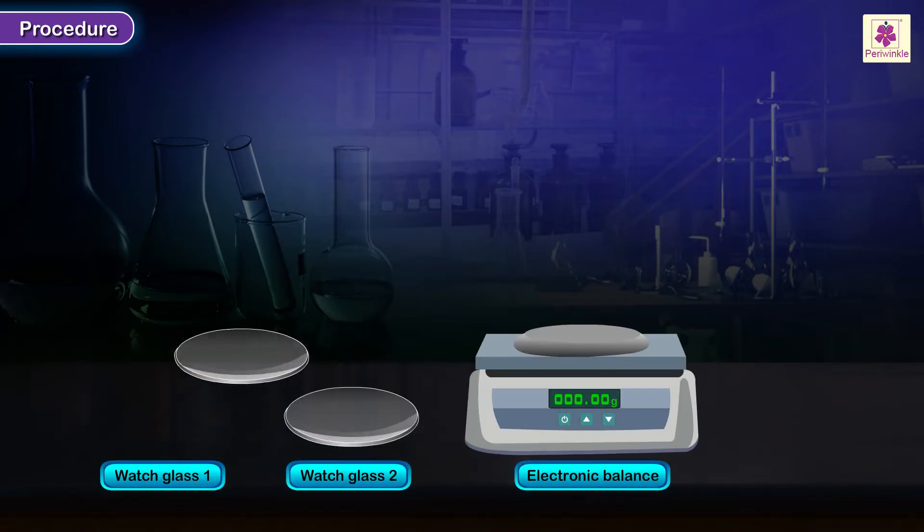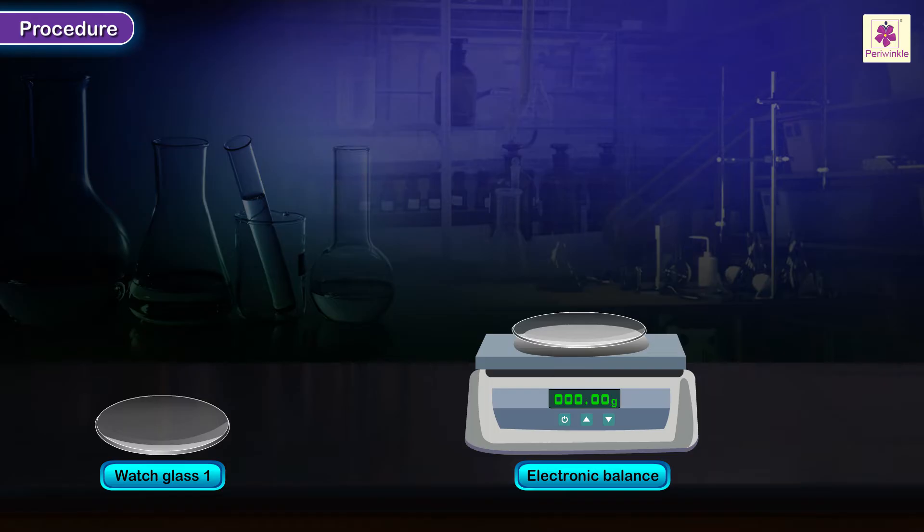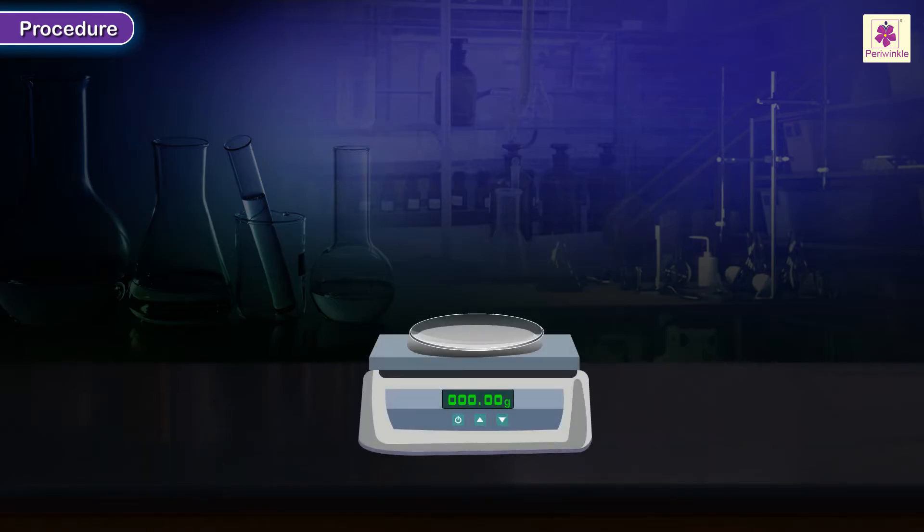Weigh the two watch glasses. Set the reading of the electronic balance to zero. Using an electronic balance, weigh 7.2 grams of barium chloride in one watch glass.